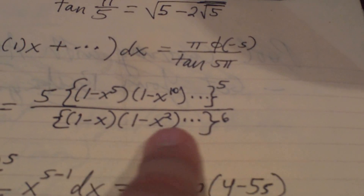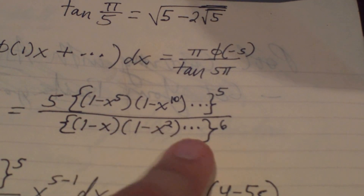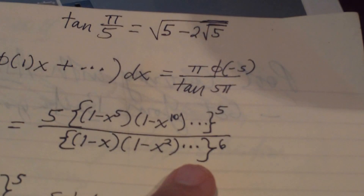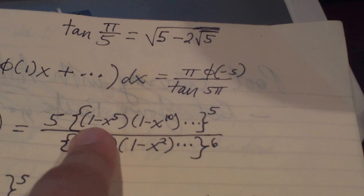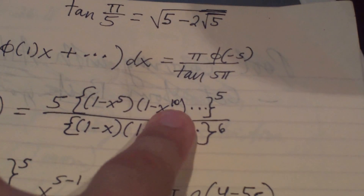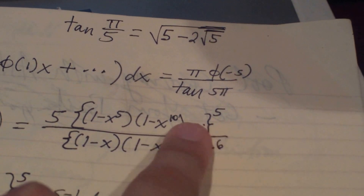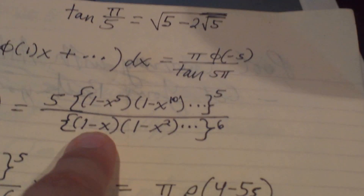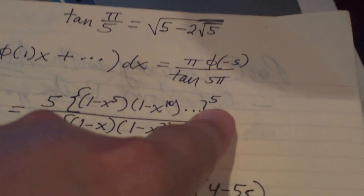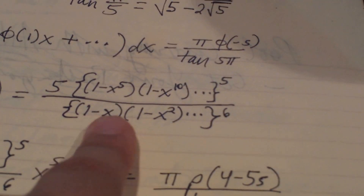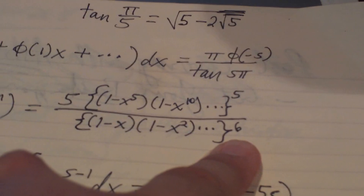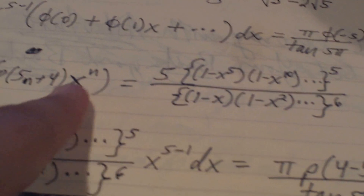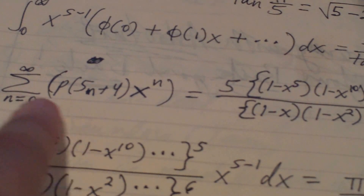What we have here is this crazy infinite product. It might look arbitrary, but it's one that we actually have a handle on, thanks to the searing, penetrating, trenchant insight of Ramanujan. We have five times this product that goes on to infinity: x to the fifth, one minus x to the tenth, one minus x to the fifteenth, and so on and so forth — all raised to the fifth power — divided by another infinite product with one minus x, one minus x squared, one minus x cubed, and so on, raised to the sixth power.